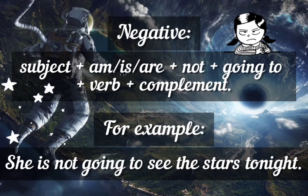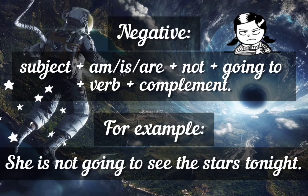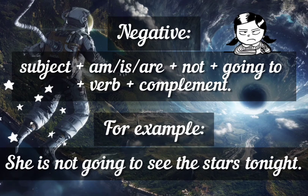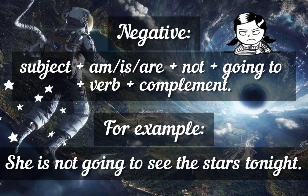Negative: Subject, am, is, or are, not, going to, verb, complement. For example, she is not going to see the stars tonight.